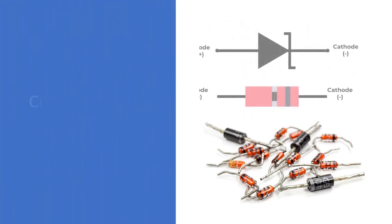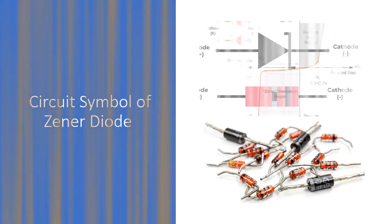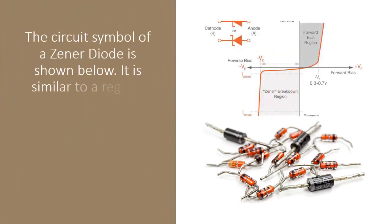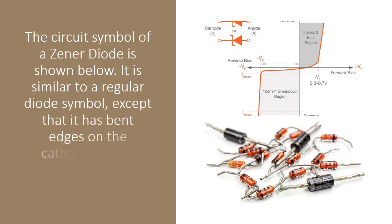The circuit symbol of a Zener diode is shown below. It is similar to a regular diode symbol, except that it has bent edges on the cathode side to indicate the Zener effect.